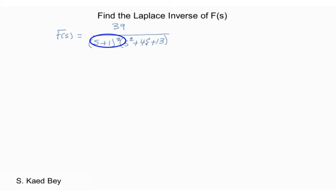Simplifying this will be as discussed in the previous videos. The second term in the denominator cannot be factored into real terms. This leaves us with two possibilities for the second term: either deal with the complex roots in the partial fraction, or keep the second order term in the denominator with its numerator as a first order polynomial.